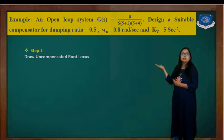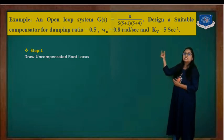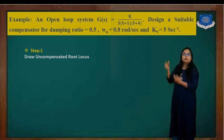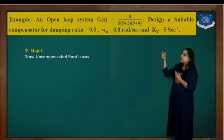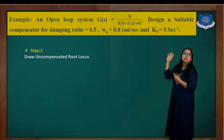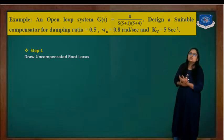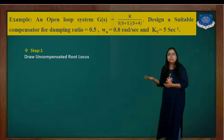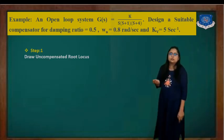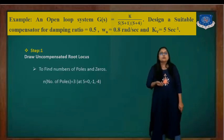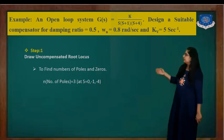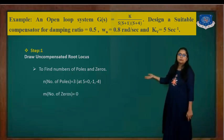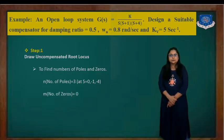In our previous video, if you remember, the error constant Ess was given to us, and from Ess we were finding the value of K. But here, directly the value of K is given to us. So what is the first step? We have to draw the uncompensated root locus. For that we are just finding the poles and the zeros. So my poles are at 0, minus 1, minus 4, and there are no zeros.